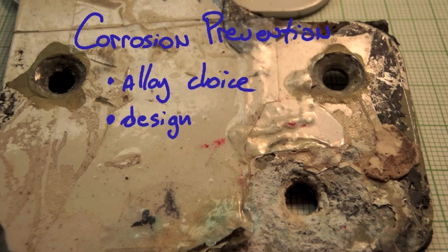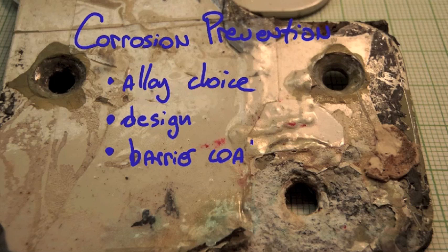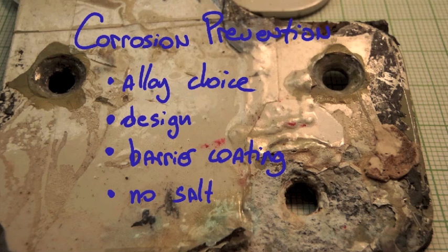Get rid of all the crevices. Third thing is if you can use barrier coatings, you want to go for barrier coatings. Barrier coatings, for example, conversion coatings, anodizing, primers or polymer coatings or organic coatings. Those all provide good protection. And the fourth thing is no salt. No chlorides. If you can avoid salt and chlorides, that's a very important way of preventing corrosion.